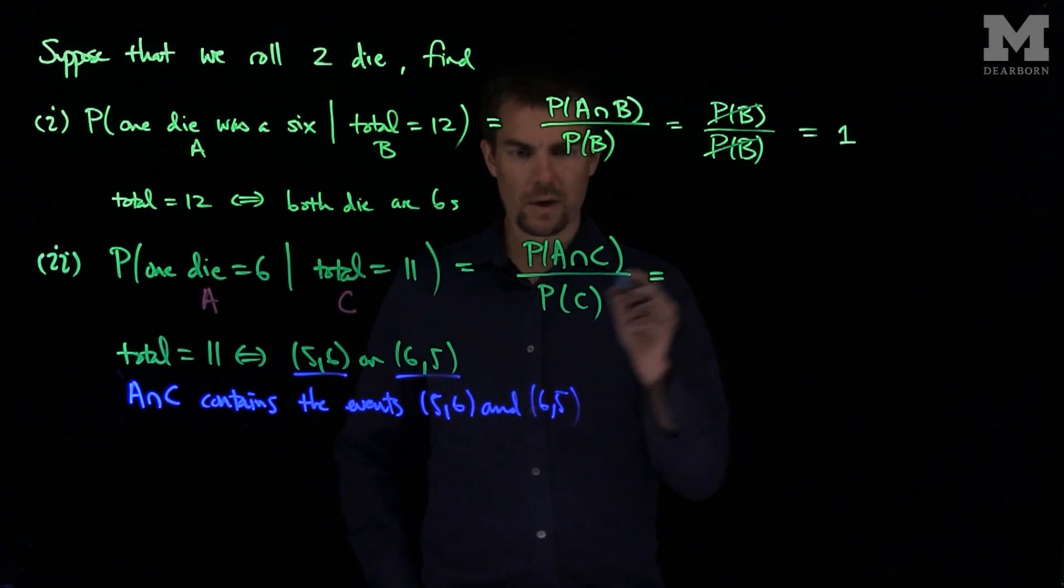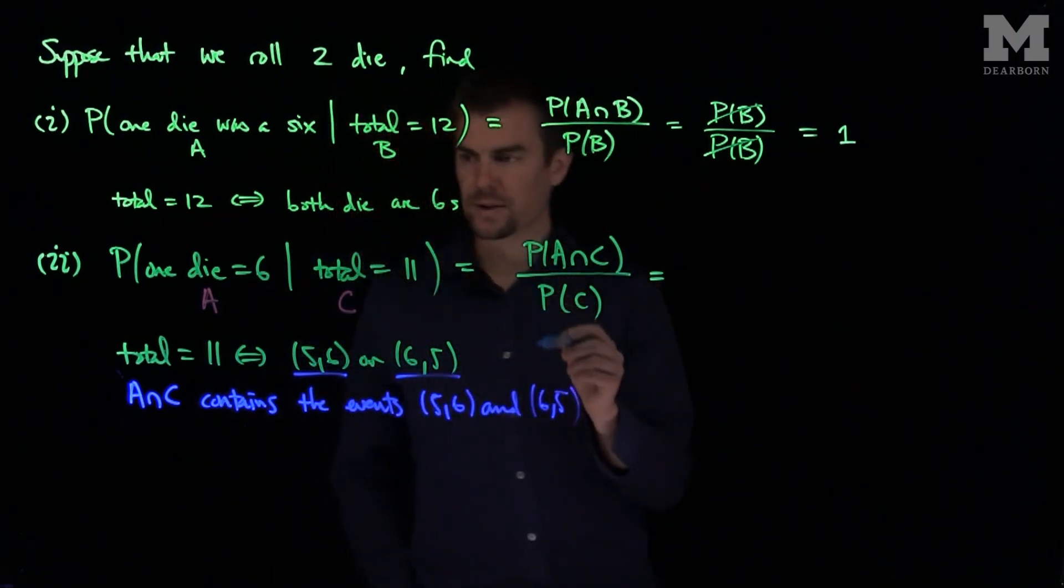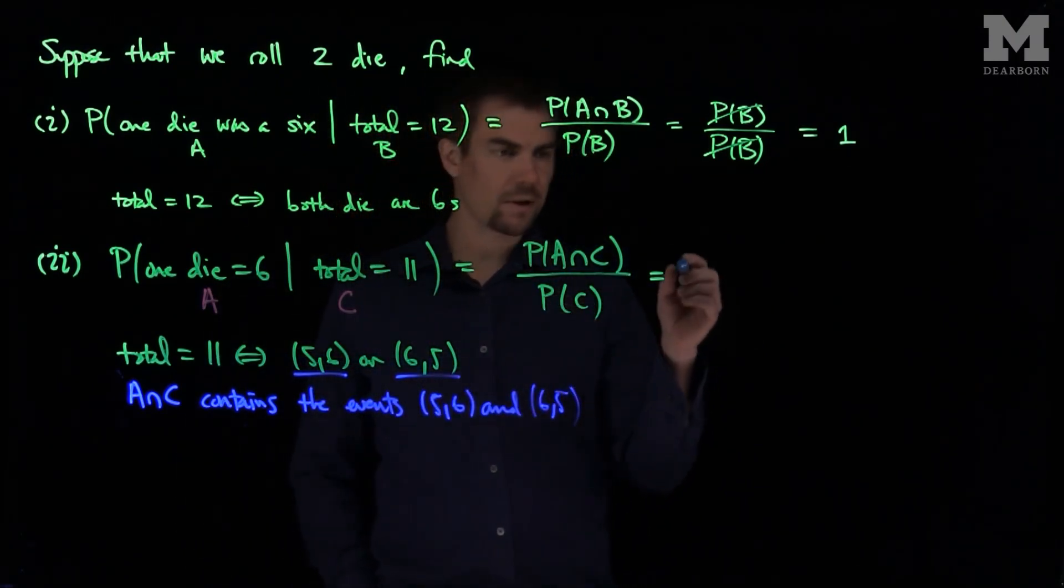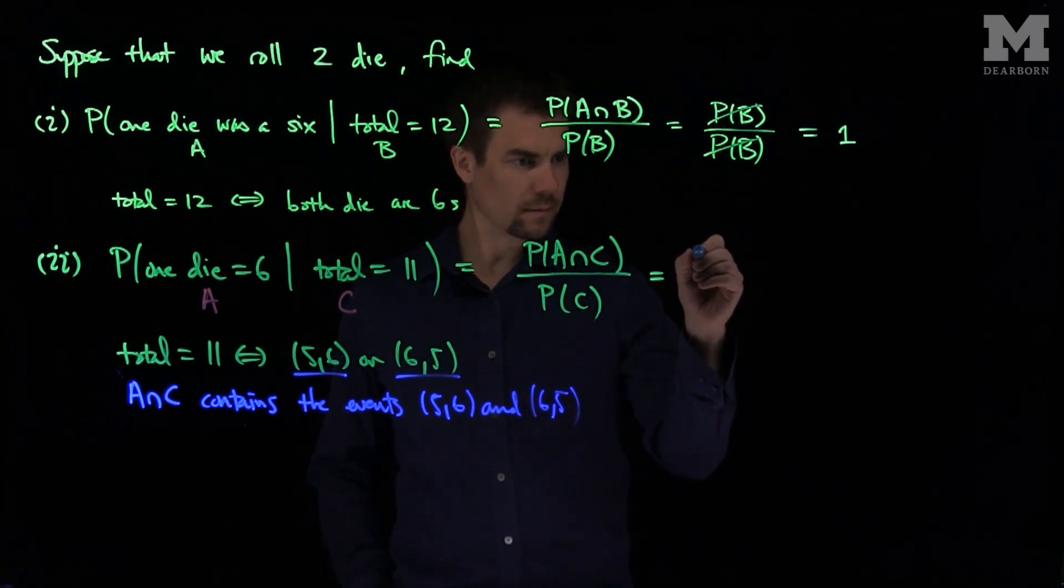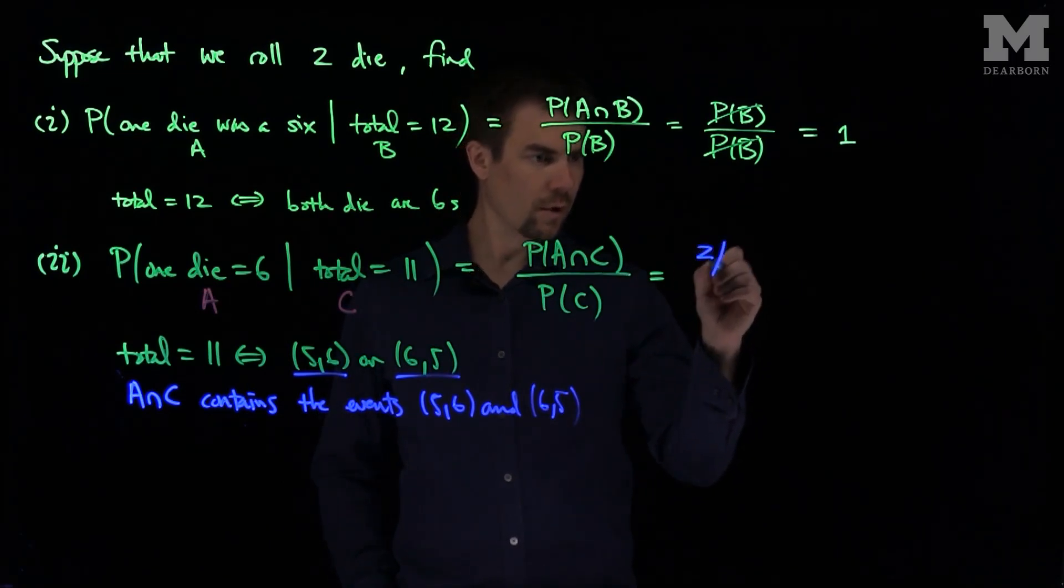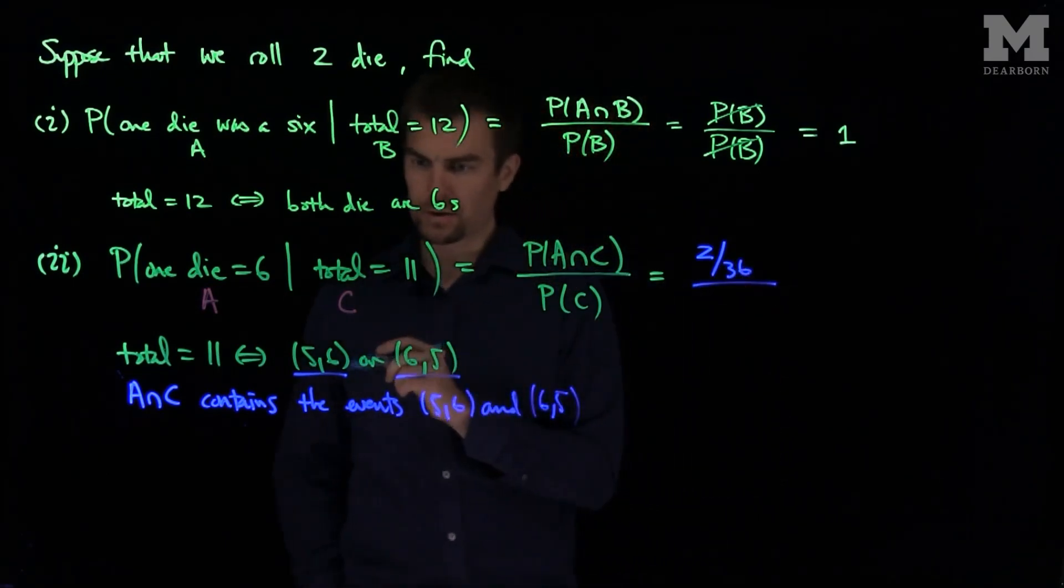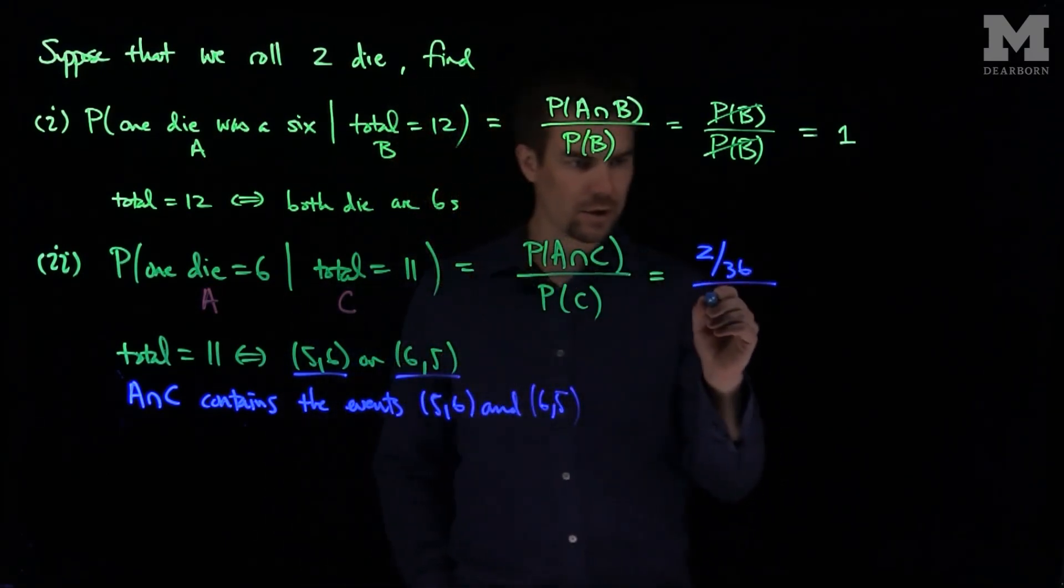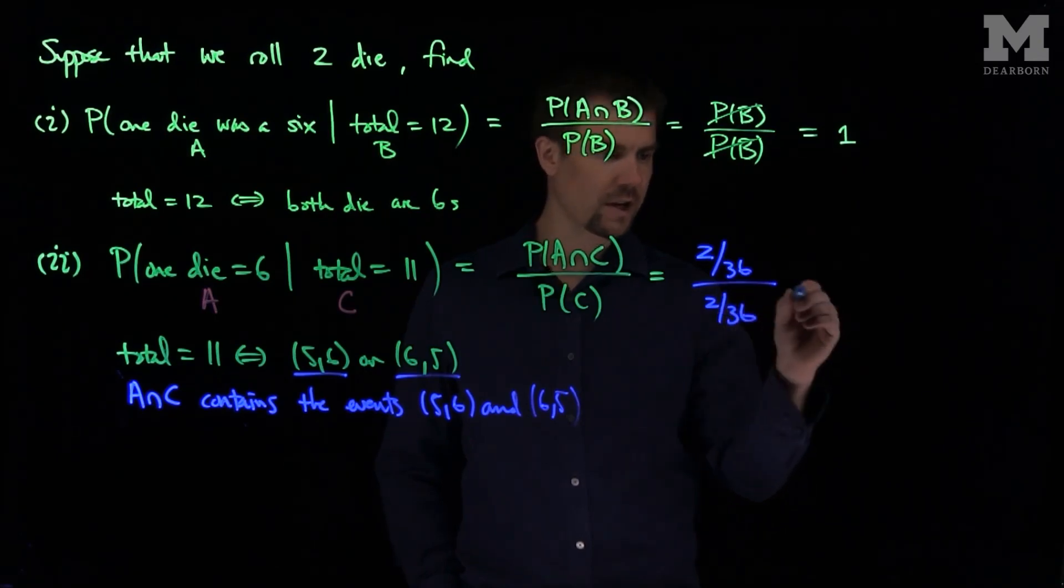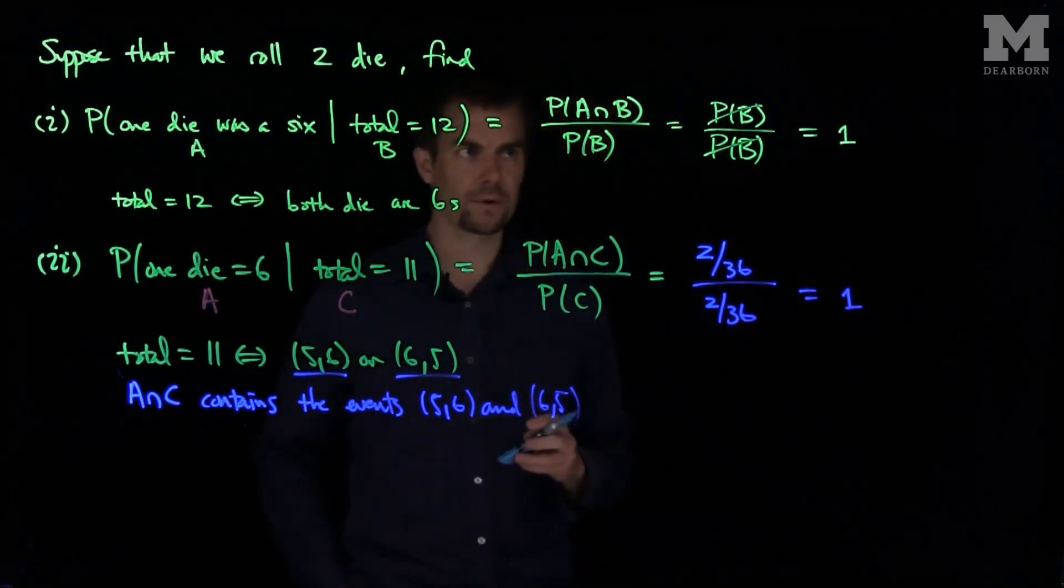So this probability will be equal to, we can just count it directly, so A intersects C means the total is equal to 11. So that's a total of 2 over 36. And the denominator is also equal to the probability of C, which is 2 over 36. So this will be equal to 1.